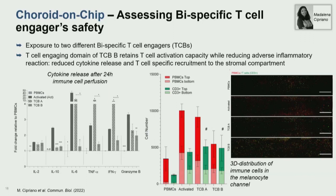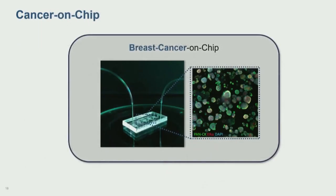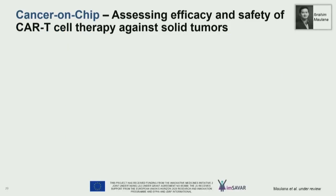So these are two examples of how you can use these immunocompetent systems to look at safety and efficacy aspects. The third system I want to talk about is our cancer-on-chip system. We work on this system to look at the efficacy and safety of CAR T cell treatment. Initially we were mostly interested in cytokine release syndrome, but we then moved more and more into efficacy aspects as well.